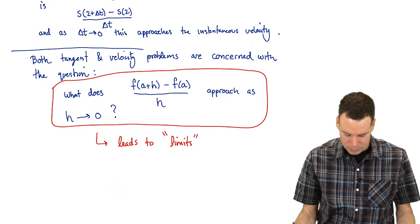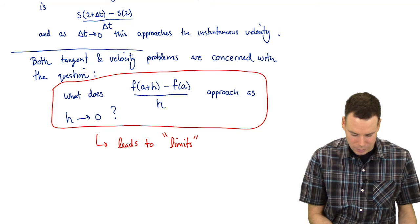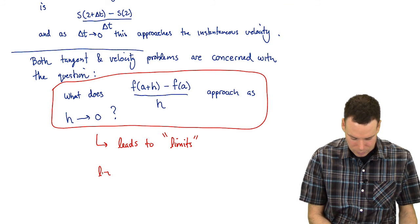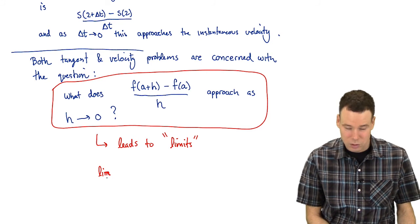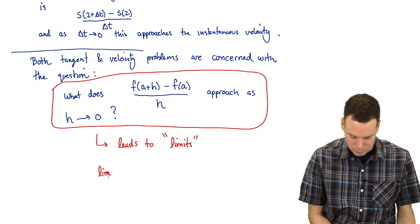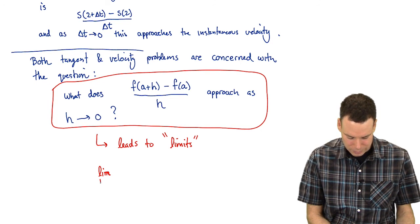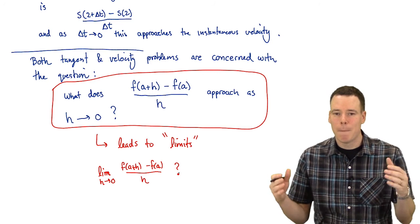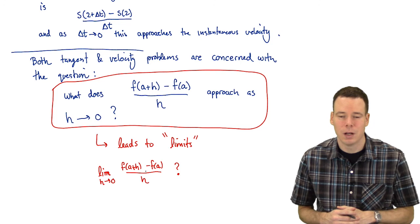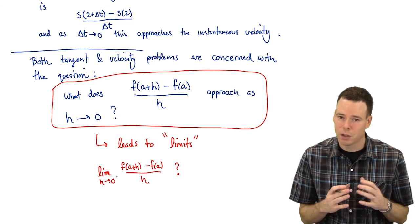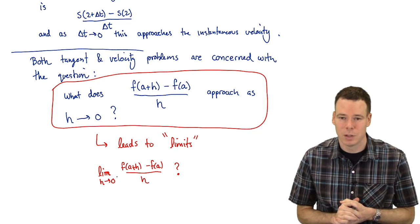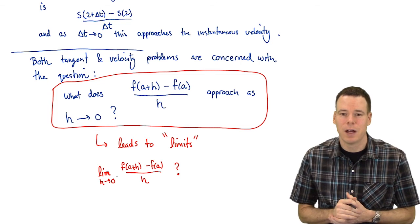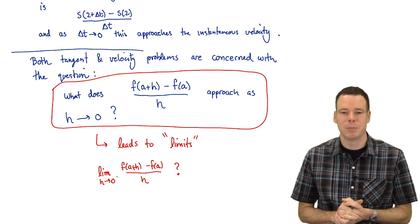If you want to write this big question in terms of a limit, it's asking: what is the limiting value as h goes to 0 of [f(a+h) − f(a)] / h? Both the tangent line problem and the velocity problem boil down to this question. In the context of the tangent line problem, this is the slope of the tangent line. In the context of the velocity problem, this is the instantaneous velocity. We'll study limits in the next section.